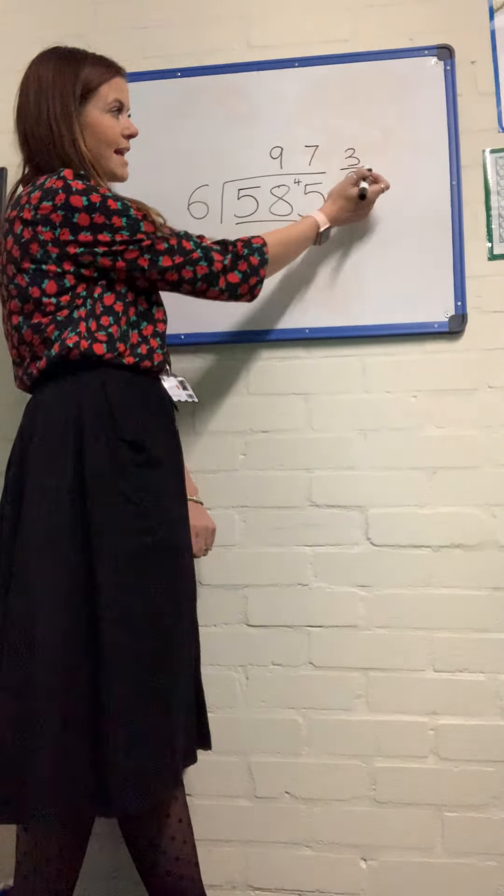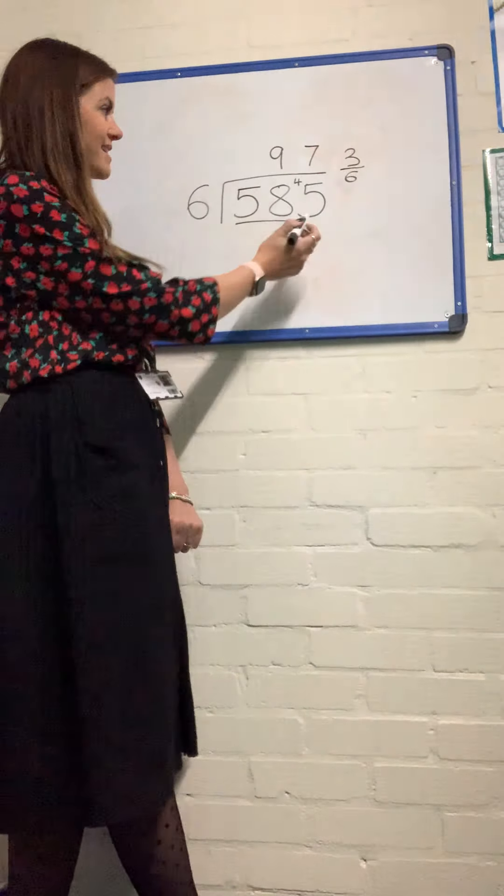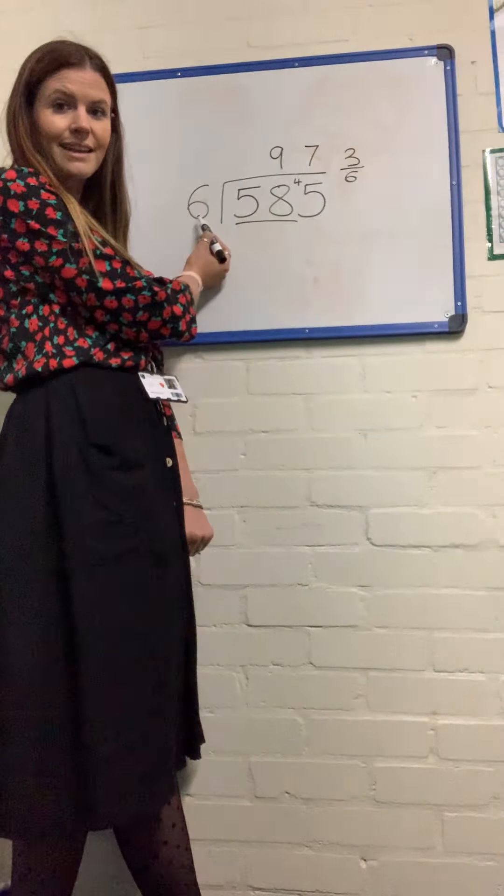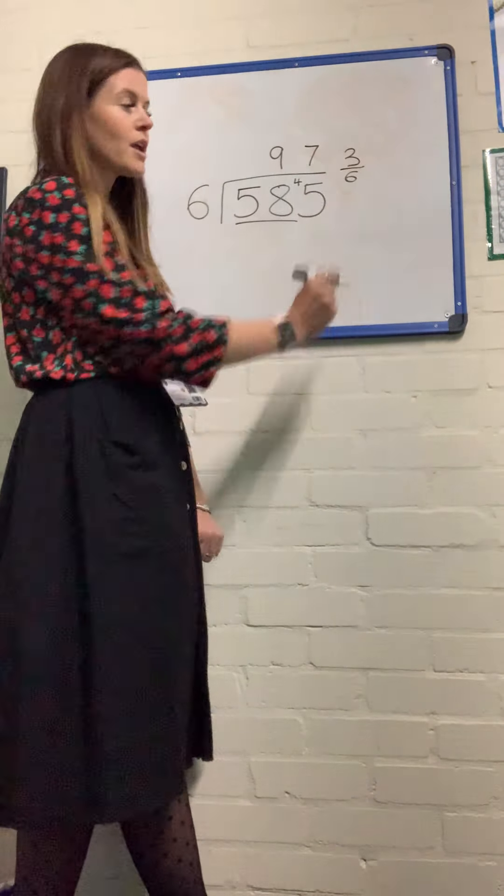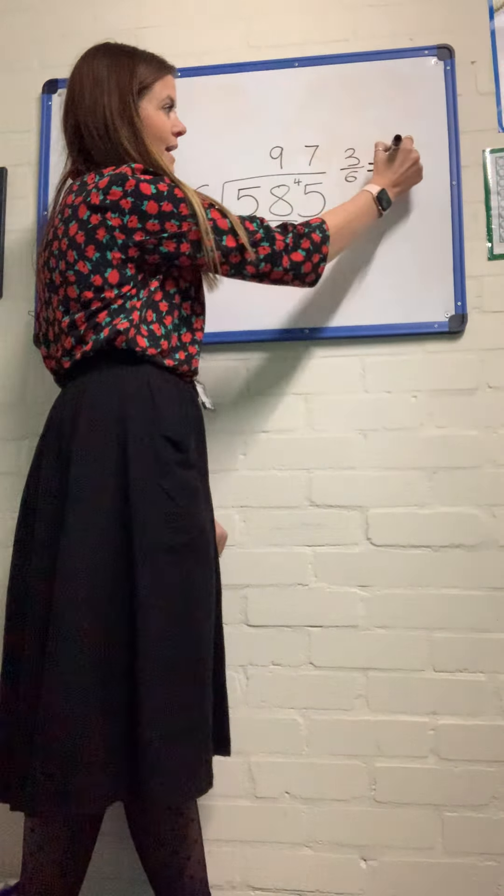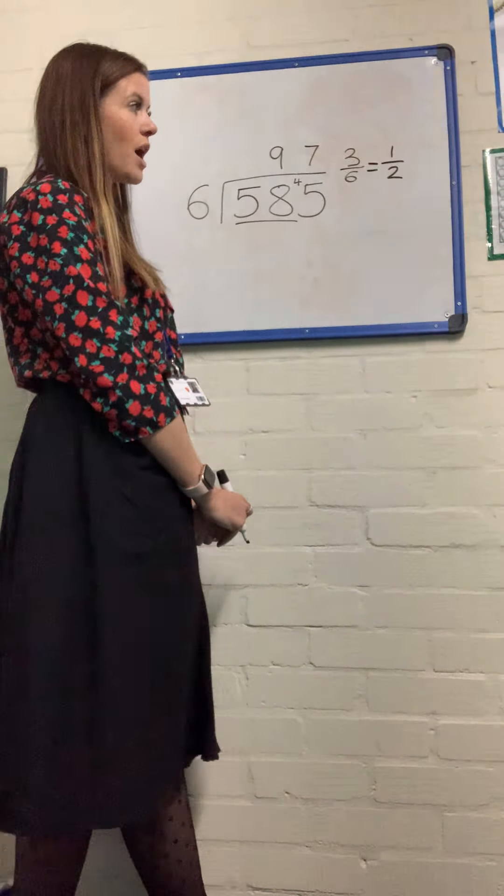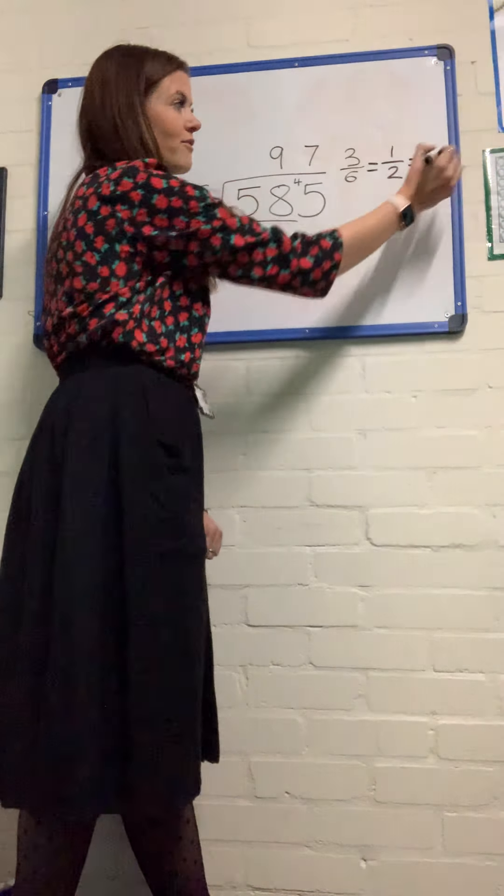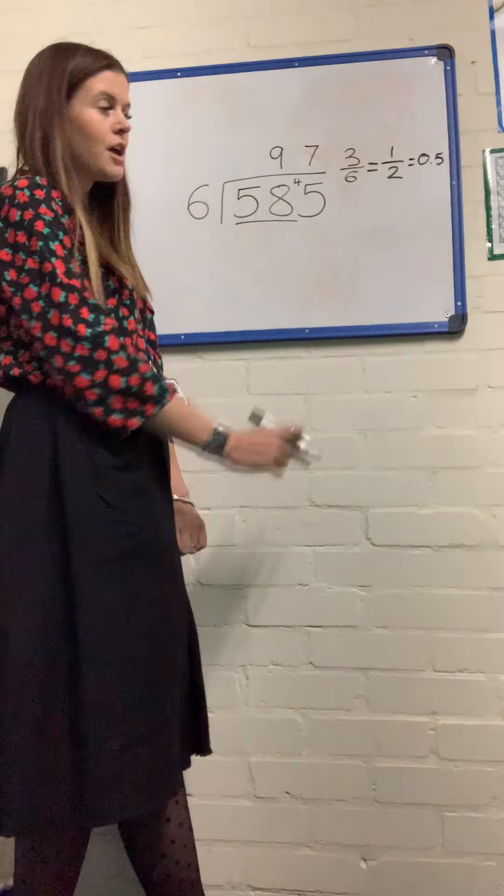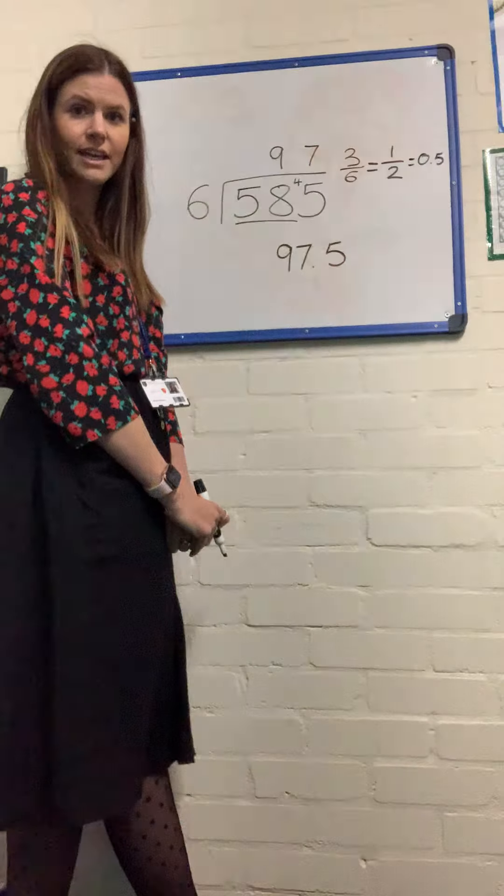Remainder 3 is saying that I've got 3 6ths left over. I'm working in 6 because I was dividing by 6 at the beginning. So 97 and 3 6ths. 3 6ths is the same as 1 half. I know that 1 half as a fraction is the same as 0.5 as a decimal. So my final answer is 97.5.